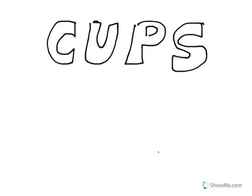For this video, we're going to use different colors to help you differentiate. For cups, we're just going to draw a C, because there's only one cup in a cup. A cup is about the amount of juice you might drink for breakfast, or the amount of milk you put on your cereal. It's a pretty small amount — it's just for you.